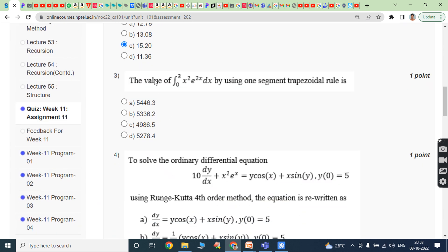Third question: The value of integral 0 to 3 of x squared times e to the power 2x dx by using one segment trapezoidal rule is answer option A, 5446.3.